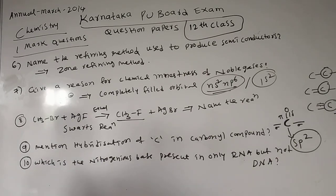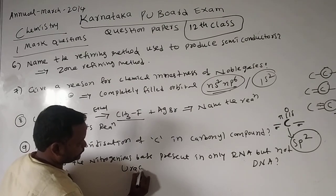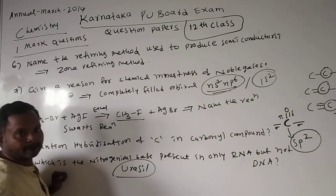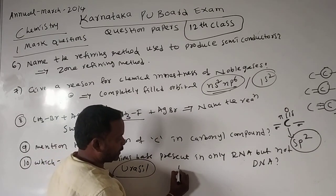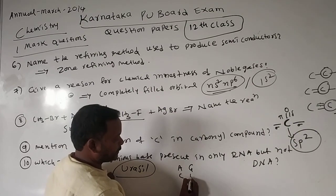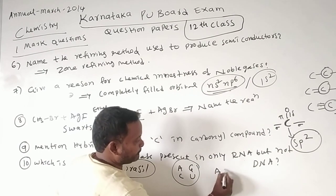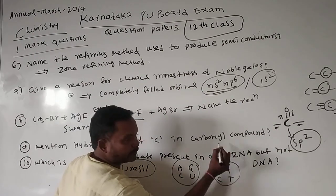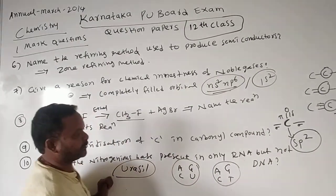Tenth question: which nitrogenous base is present in RNA but not in DNA? The answer is uracil. In RNA we have adenine, guanine, cytosine, and uracil. In DNA we have adenine, guanine, cytosine, and thymine. So the difference is uracil is in RNA, and thymine is in DNA.